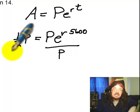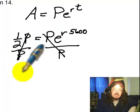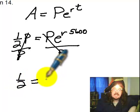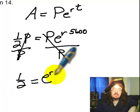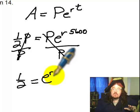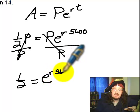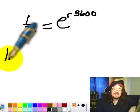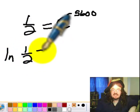So I divide, I get one half P, or one half equals E to the R times 5,600. And then I take the natural logarithm of both sides.